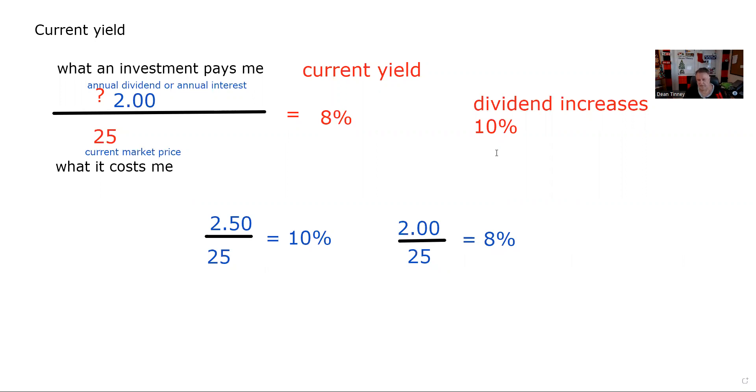And now it says it's a 10% increase. So $2.00 times 10% equals, let me get my calculator. You can do 110%, there are lots of ways to do math. So 2 times 10%, that's going to be another $0.20.